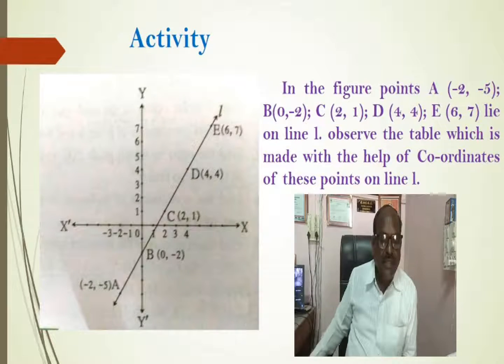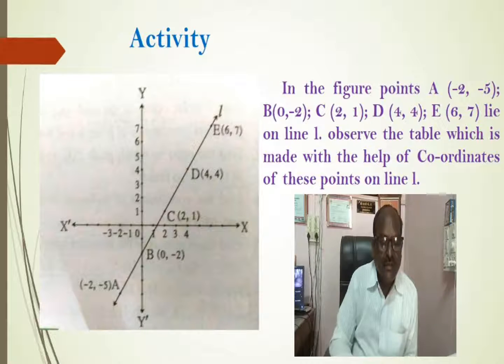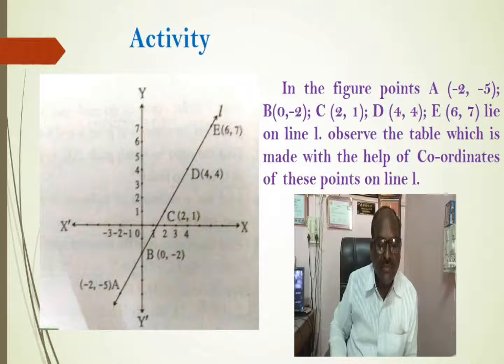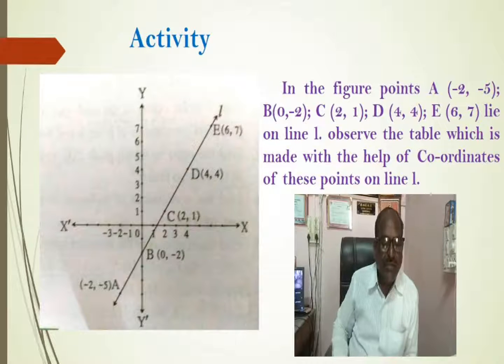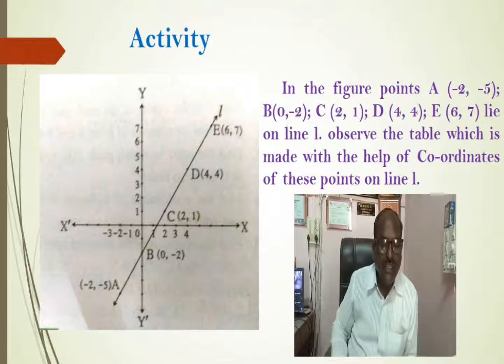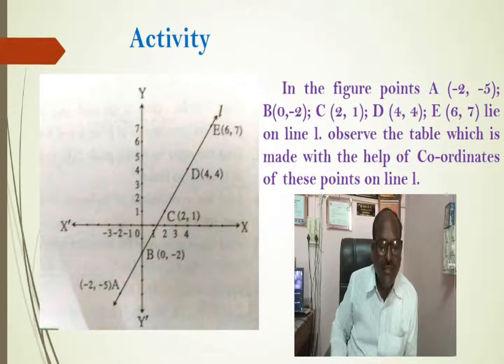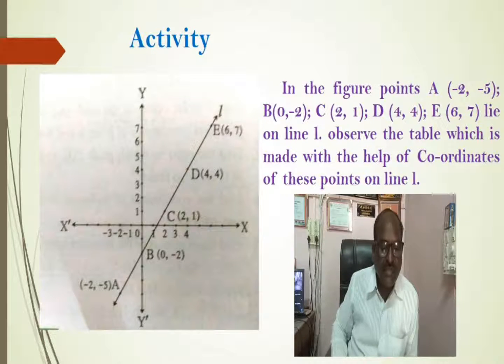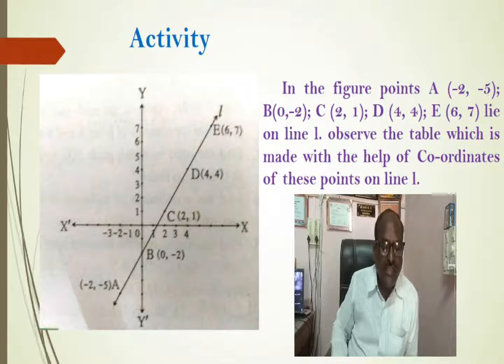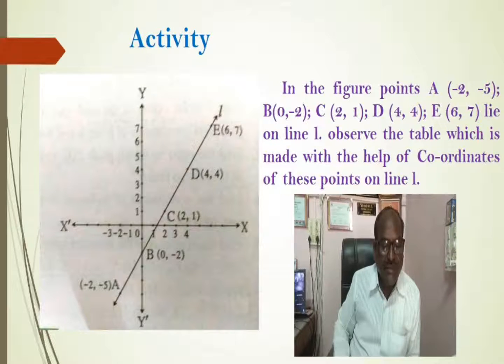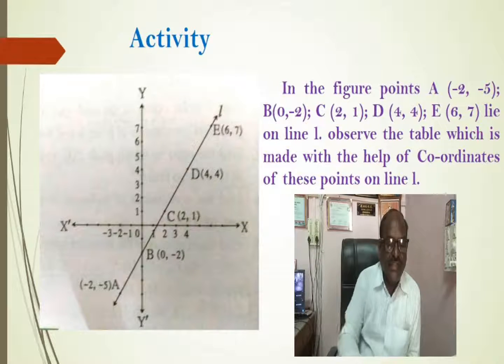See the figure. There is a XY plane. There are points A (-2, -5), B (0, -2), C (2, 1), D (4, 4), E (6, 7) lie on a line L. Here, observe the table which is made with the help of coordinates of these points on line L.